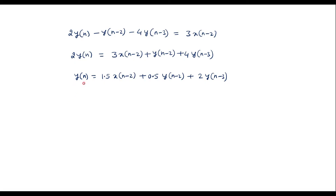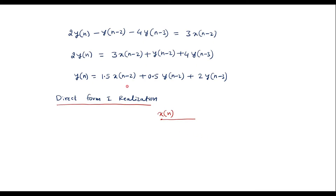With the help of this difference equation, let me draw the direct form 1 realization. Here x(n) is input and y(n) is output. We need x(n-2), so it should pass through two delay elements — z-inverse is known as a delay element. The output of the first is x(n-1), and passing through another delay element z-inverse gives x(n-2). It should be multiplied with scaling factor 1.5.